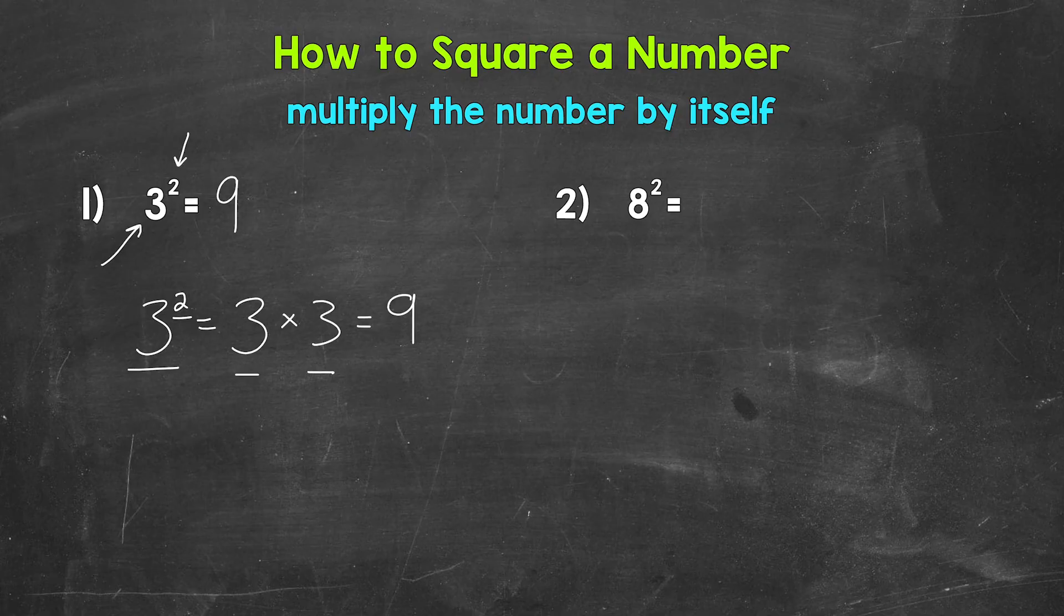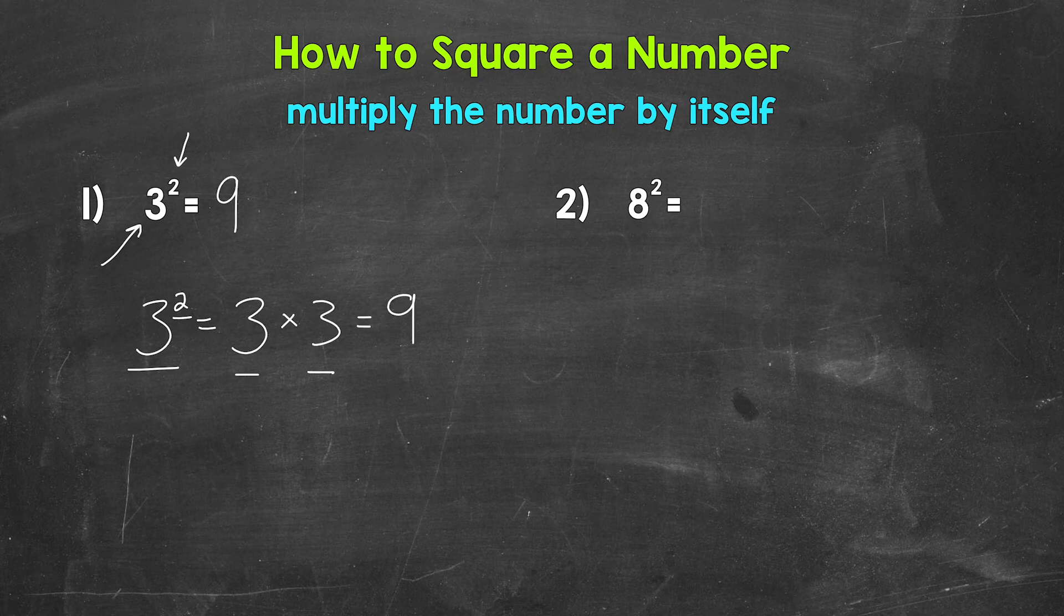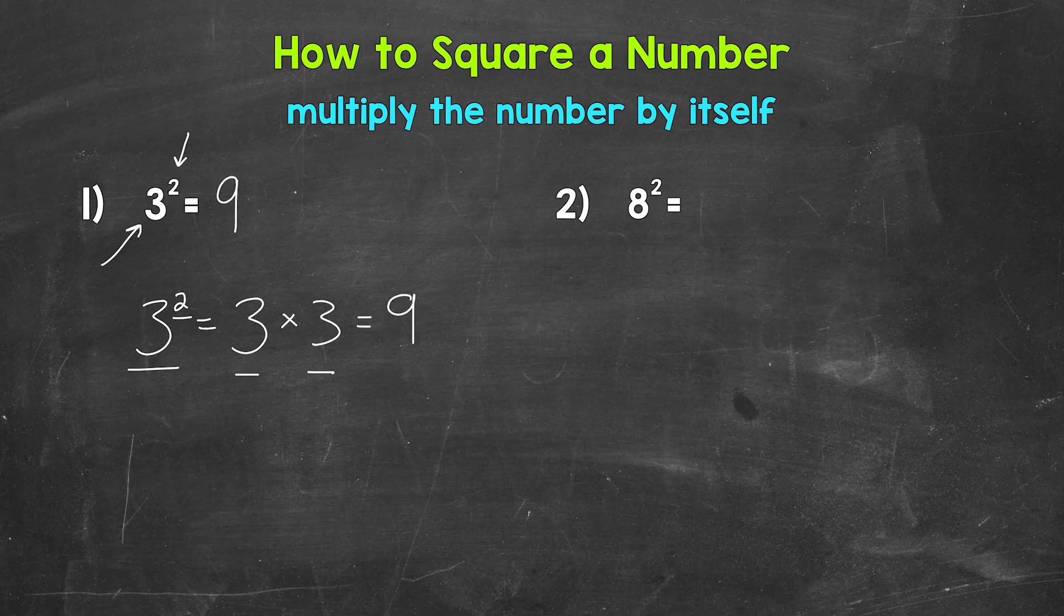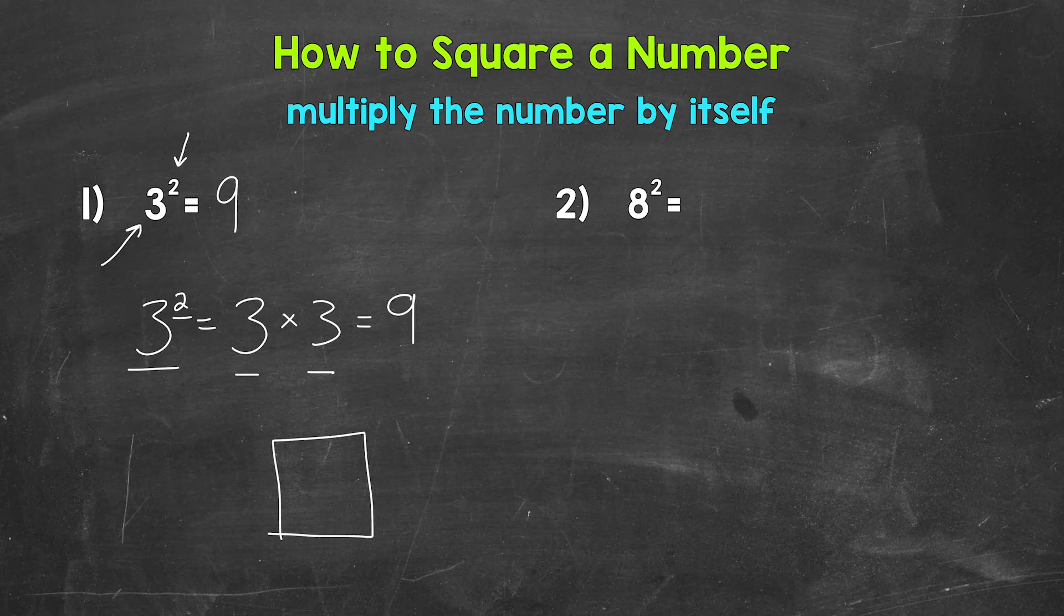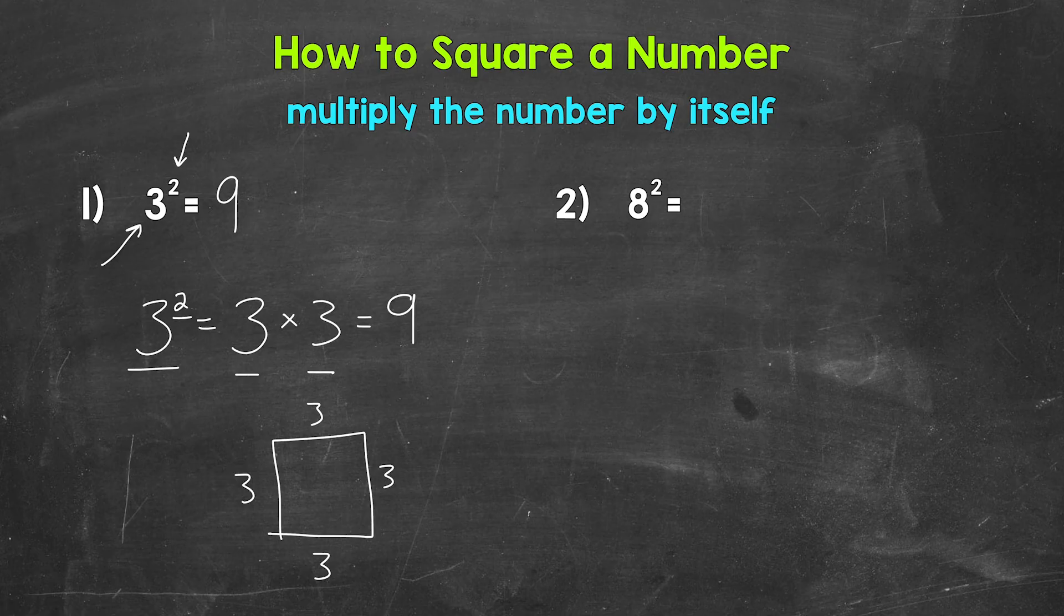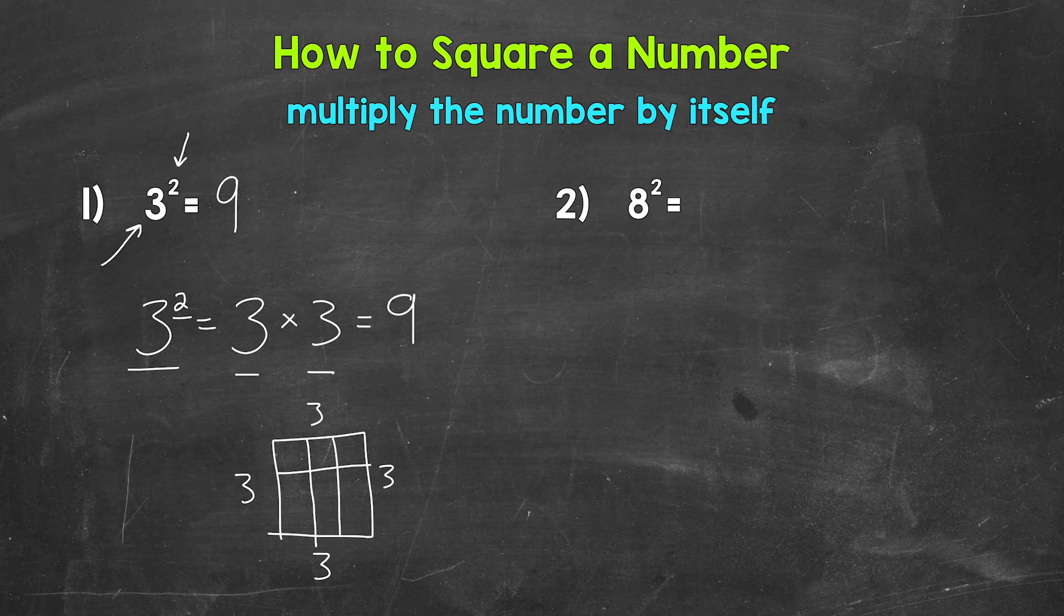Before I move on to number 2, I do want to mention why we call it squaring a number. If we take a look at a square, we can see why we call it squaring a number. For example, if we have a square with side lengths of 3, we can find the area of that square by doing 3 squared, or 3 times 3. So 3 by 3, that gives us an area of 9.